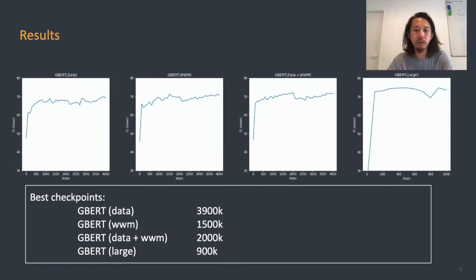Here you can see the performance curves for each of our GBERT models, showing how performance improves over time with training. From these, we took the best point in each graph to determine the final checkpoint for each model. For example, for GBERT data, it was step 3.9 million, which showed the best performance over all three tasks.